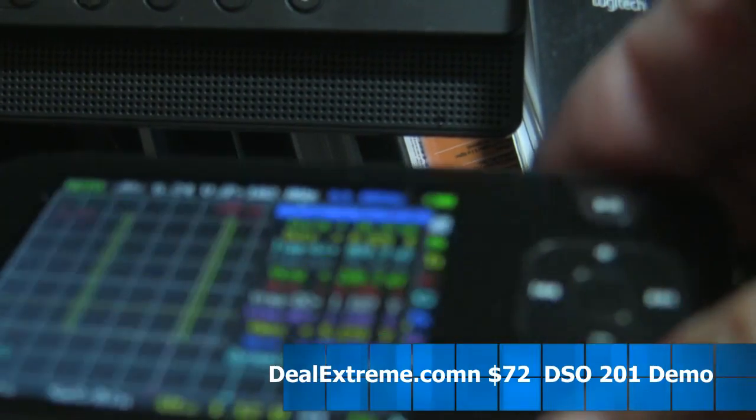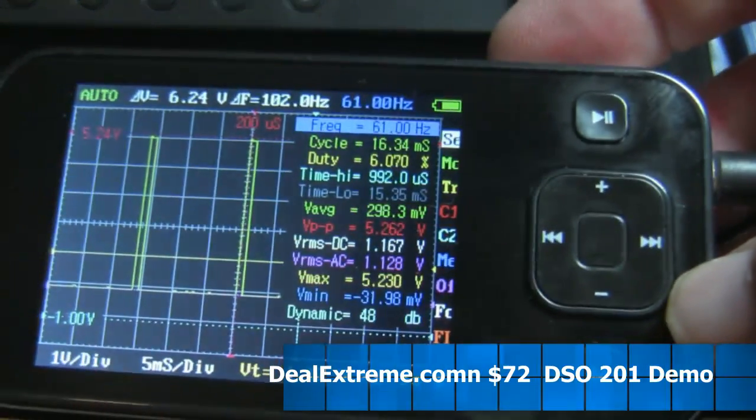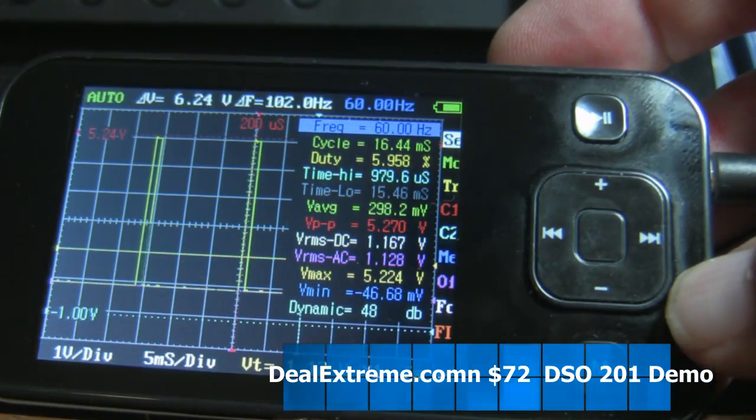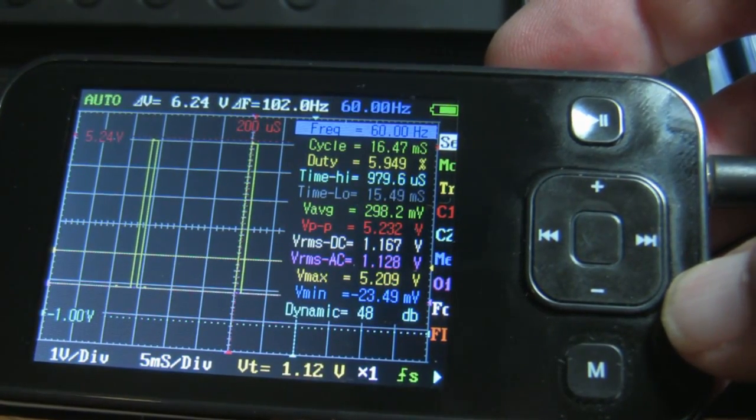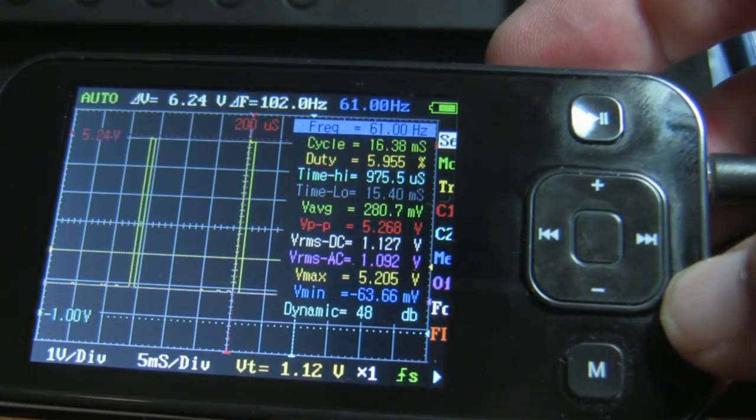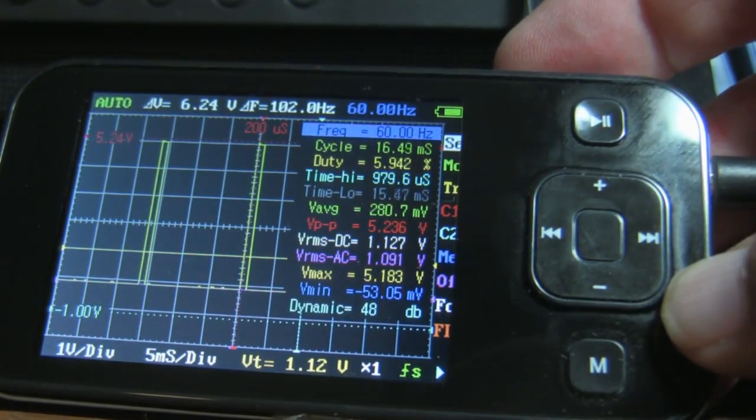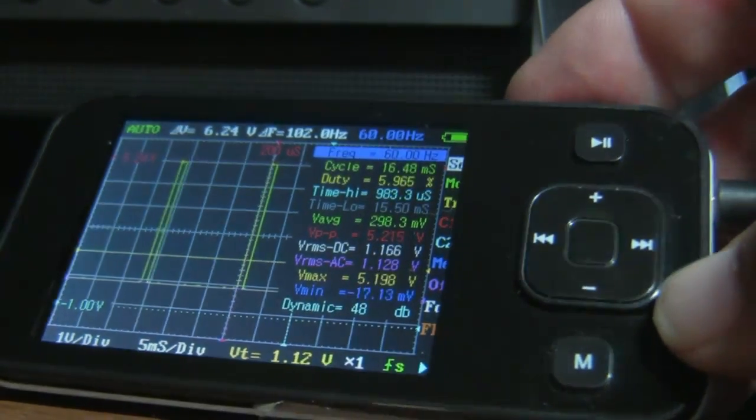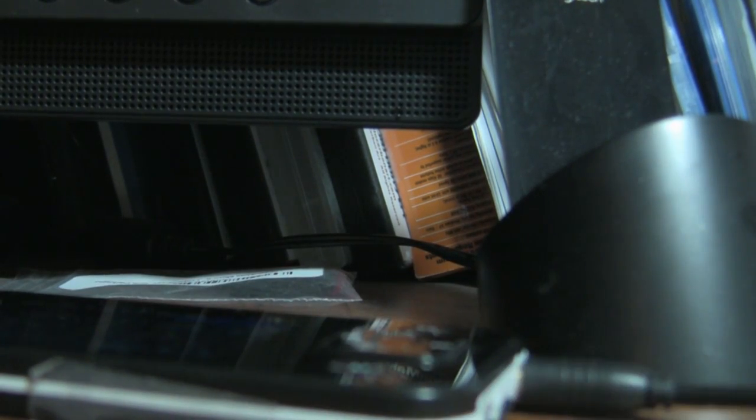Okay, so I'm going to kind of take it from the top again here. This is a DSO-201 digital storage scope, $72 on dealextreme.com, and I currently have an oscilloscope probe hooked up to it.